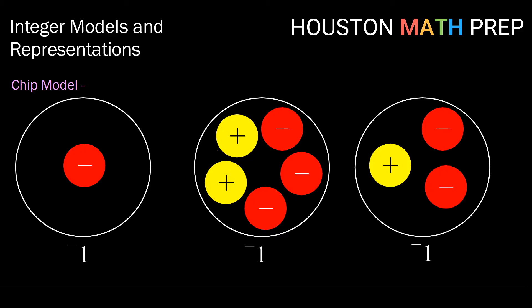Here's another same idea here. Modeling negative 1 we can do so with two negatives and one positive. If we stack or remove one pair of opposites, we have one negative chip left over.